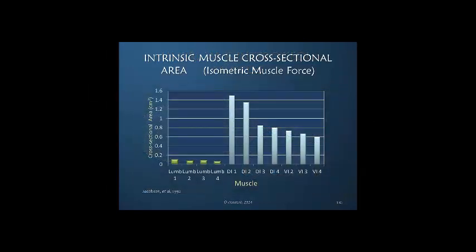Here we're looking at force, which relates directly to cross-sectional area. We can see how very weak the lumbrical muscles are, with the larger first dorsal interosseous being the strongest, and the dorsal interosseous being slightly stronger than the volar.